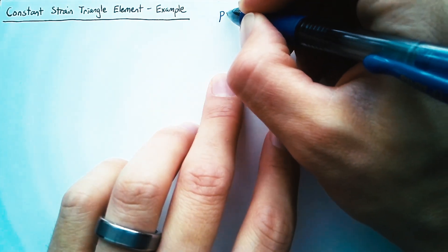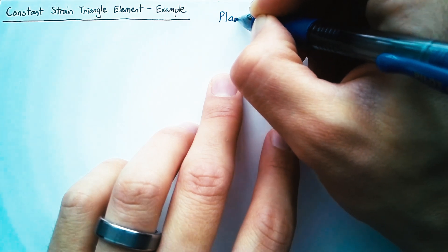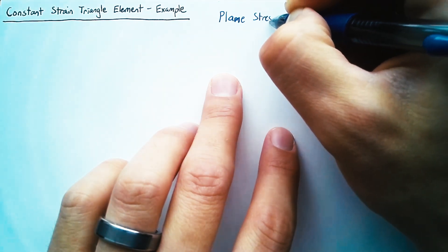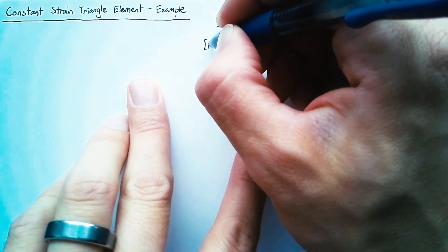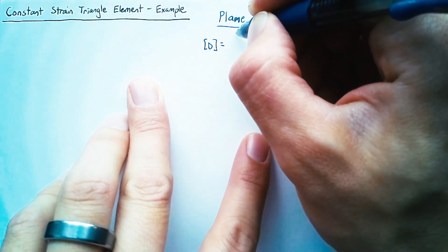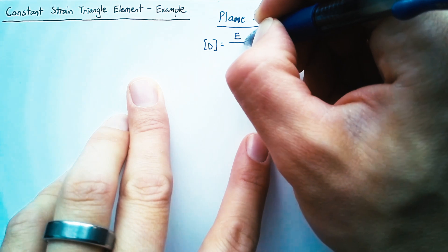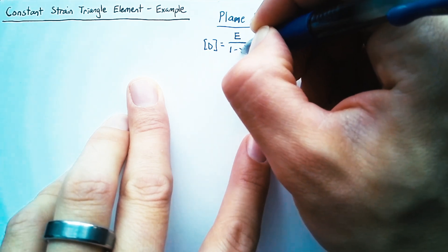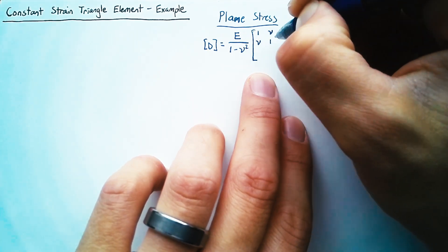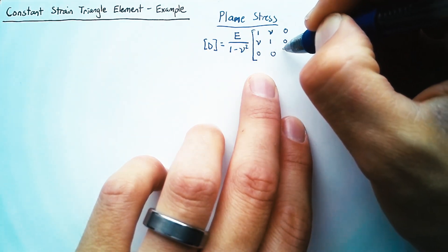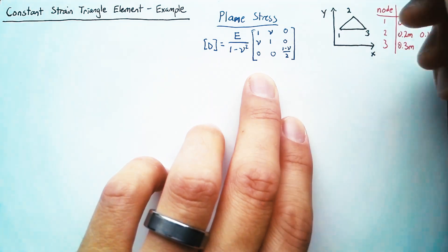Now we're going to be looking at a thin plate which often means that we can use the plane stress simplification which says that our constitutive matrix D is equal to the Young's modulus over 1 minus Poisson's ratio squared multiplied by a 3 by 3 matrix which consists of a lot of 1's and Poisson's ratio.